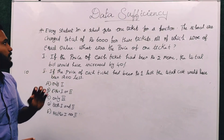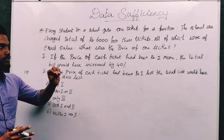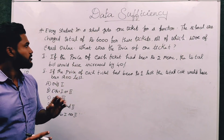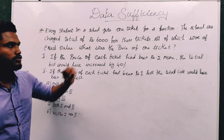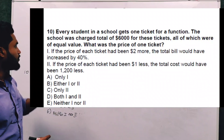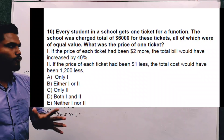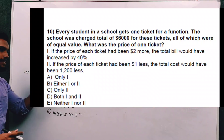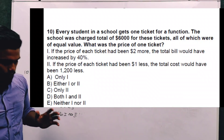Time starts. Every student in a school gets one ticket for a function. The school was charged a total of Rs. 6000 for these tickets, all of which were of equal value. So what was the price of one ticket? Here are Statement 1 and Statement 2. Time starts now.